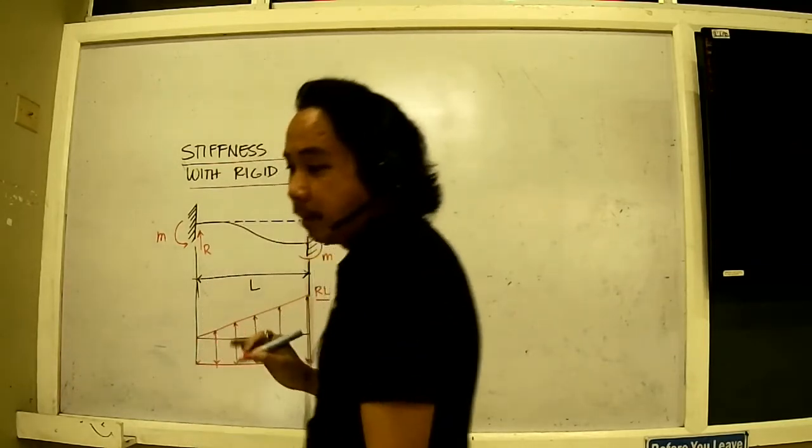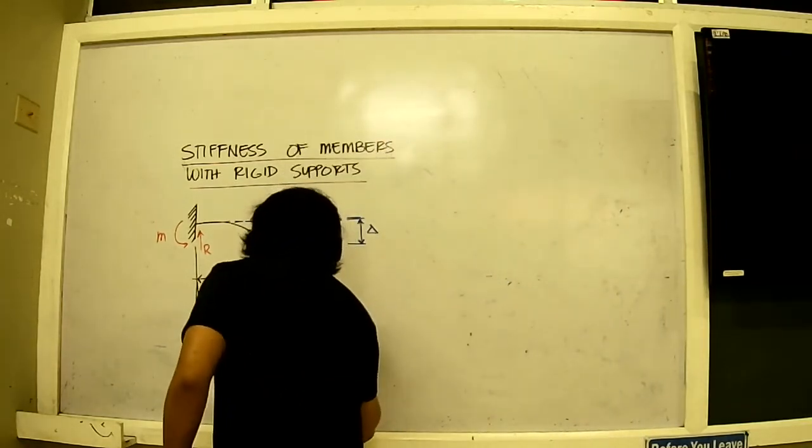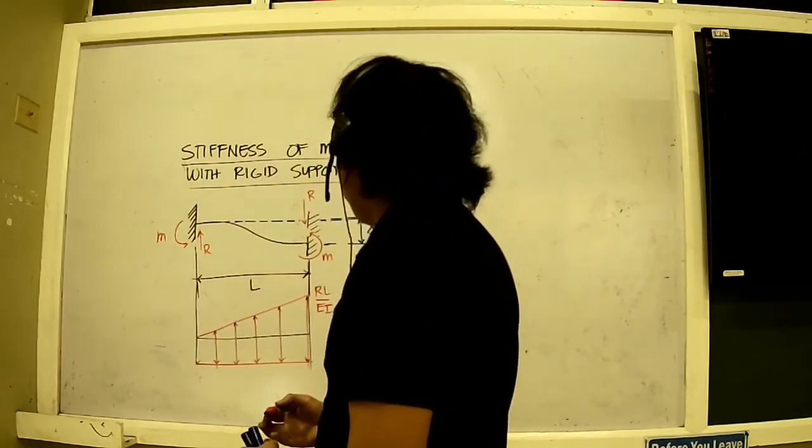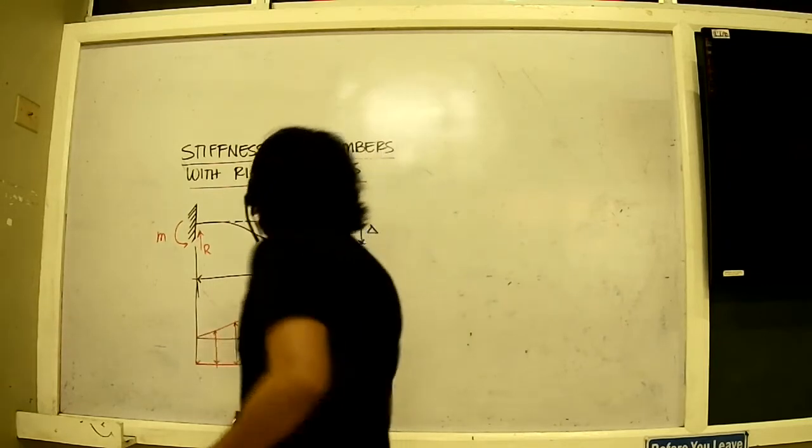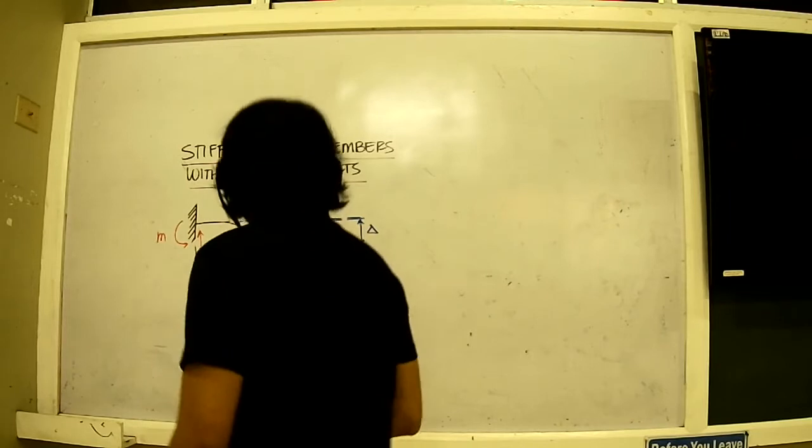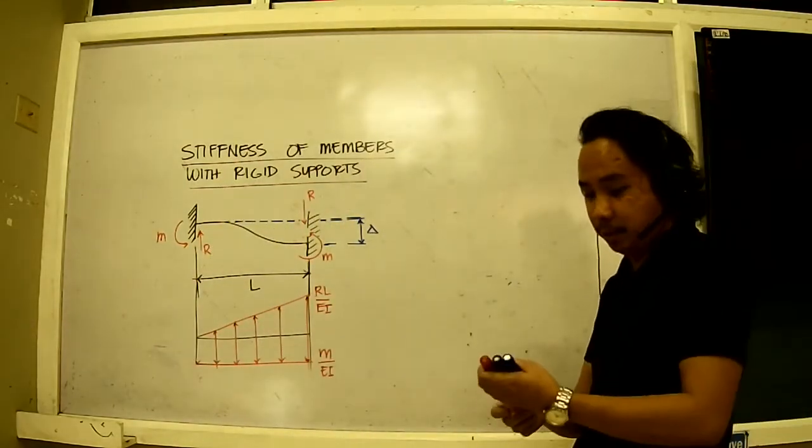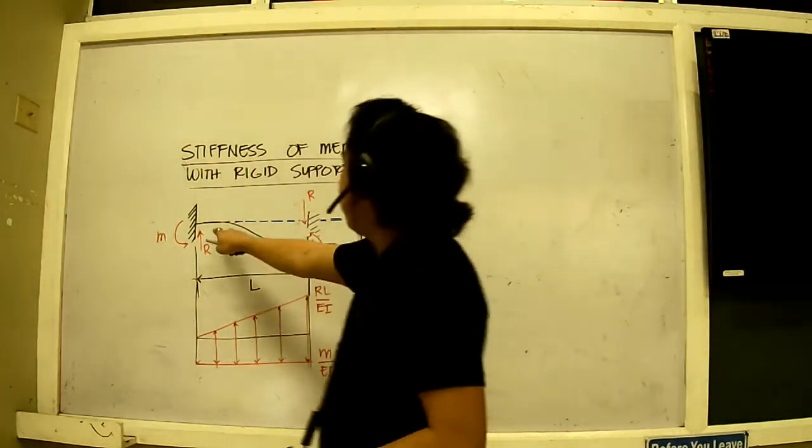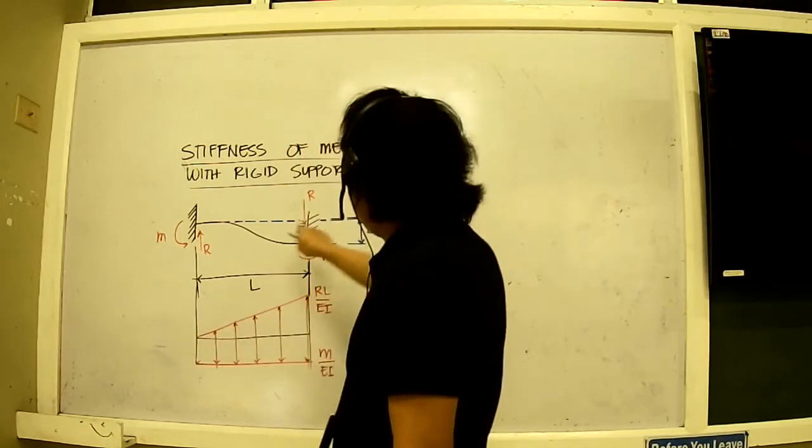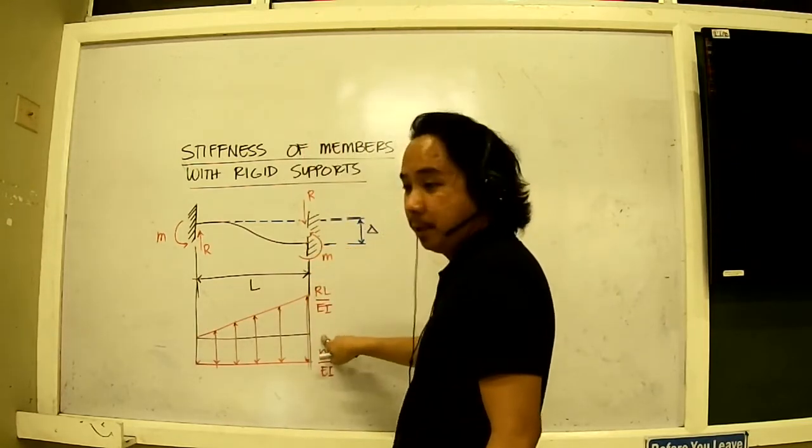Now when I draw the conjugate beam for this, R should be going this way, straight. M is also going down here. This is equal to R times L divided by EI. We have this moment here divided by EI. We have our conjugate beam. This is a fixed end. Conjugate beam version, there's no fixed end. This is a fixed end, so this is a free end as well.